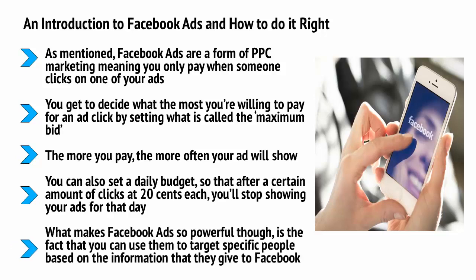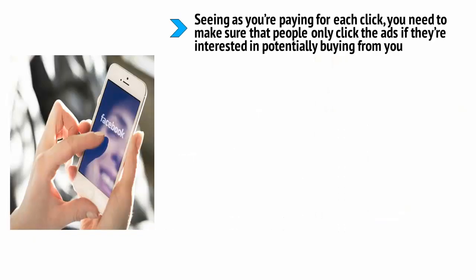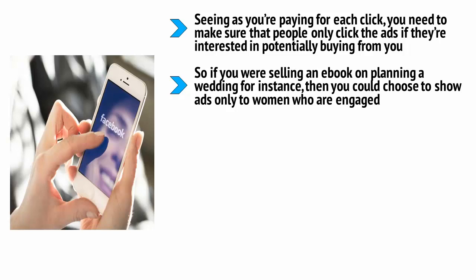What makes Facebook ads so powerful is the fact that you can use them to target specific people based on the information that they give to Facebook: their age, their sex, their location, as well as their interests, their relationship status, and even their income. Seeing as you're paying for each click, you need to make sure that people only click the ads if they're interested in potentially buying from you. Therefore, you want to make sure that only the right kind of person sees your advert. So if you were selling an e-book on planning a wedding, for instance, then you could choose to show ads only to women who were engaged. This way, there will be a much higher chance of them being interested in your book.